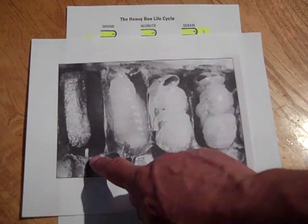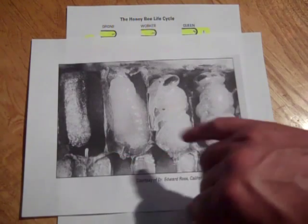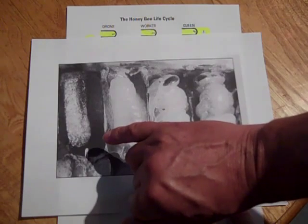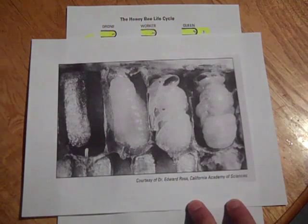And you can see here's an egg and a bee is about the size of my little finger now so you can see how much this is magnified. It's very hard to see those eggs, you usually need a magnifying glass.